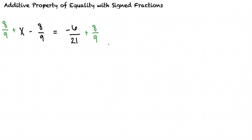giving us 8 ninths plus x minus 8 ninths equals negative 6 over 21 plus 8 ninths. So the 8 ninths will cancel and we'll have x by itself.